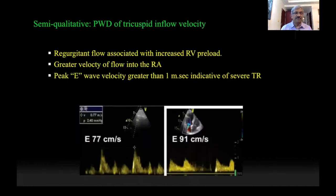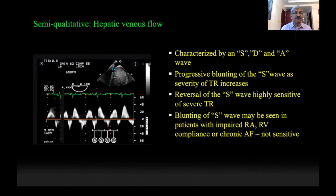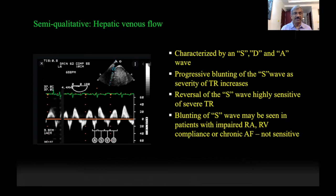For semi-quantitative assessment, we also look at the pulsed wave Doppler of the tricuspid inflow into the right ventricle. As severe tricuspid regurgitation increases, the initial flow velocity into the right ventricle may be high, and an E-wave velocity of more than 1 m/s is generally considered severe TR. The hepatic venous flow can also be used. Normally, you have S, D, and A waves similar to the pulmonary venous pattern. A reversal of the S wave is indicative of severe TR. On the other hand, blunting of the S wave alone is not indicative of severe TR, as decreased RA or RV compliance can cause a similar blunting pattern.